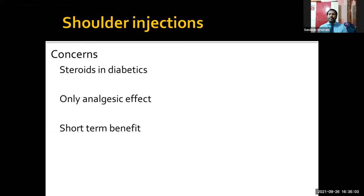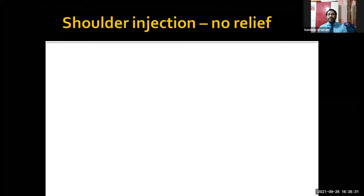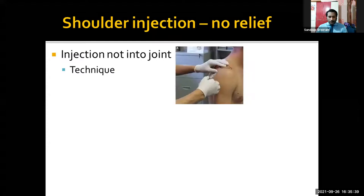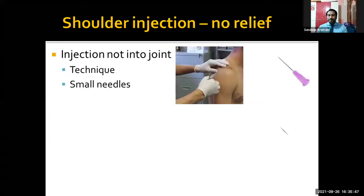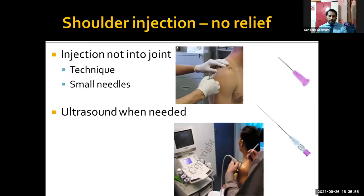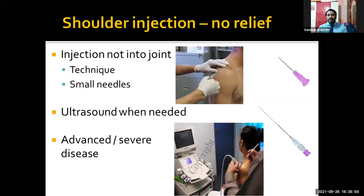The steroid effect lasts up to six weeks, and within that time it is very important to continue physiotherapy intensively to improve range of motion. By the end of the steroid effect, the patient will have a good pain-free shoulder. If the injection produces no relief, the injection was probably not into the joint — maybe wrong technique or wrong approach. In obese patients, I generally use spinal needles or ultrasound-guided injections. In very advanced severe disease or in frozen shoulder with coracohumeral ligament contractures, conservative management does not help and arthroscopic release is required.